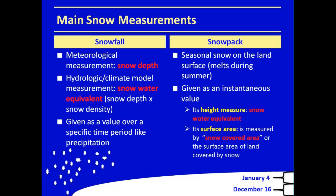On the right-hand side, the other main snow variable is snowpack. Snowpack is the seasonal snow on the land surface — it collects during the winter and then melts during the summer. It's given as an instantaneous value of what is seen on the ground. It has two different measurements: one is its height in terms of snow-water equivalent — the snow column on the ground melted down to the height of that water — and it also has a surface area measurement, the snow-covered area, or the surface area of land covered by snow.